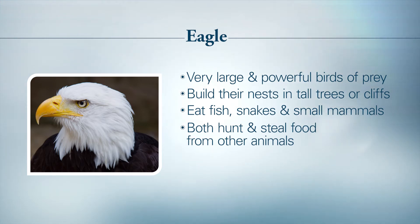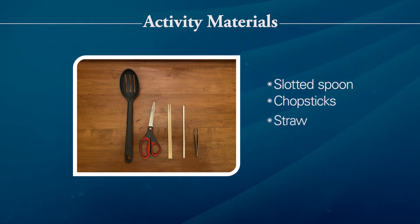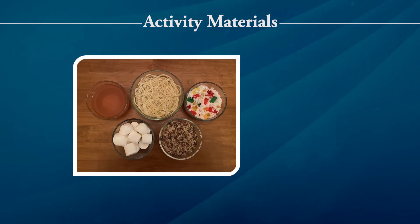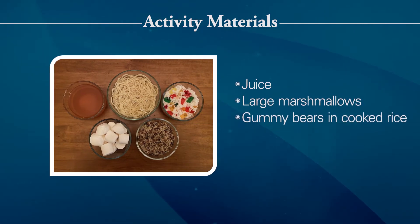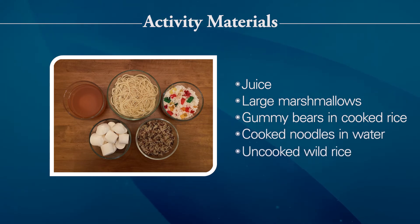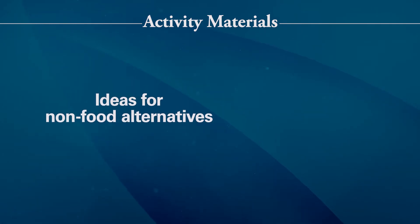To represent our bird beaks, I'll be using the following items: a slotted spoon, a pair of chopsticks, a straw, scissors, and a pair of tweezers. For our bird food, you will need five containers filled with juice, large marshmallows, gummy bears in cooked rice, cooked noodles in water, and uncooked wild rice. You can also use non-food items such as water, cotton balls, string, craft beads, and small pom-pom balls.